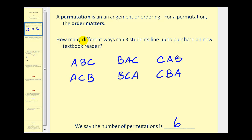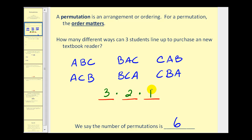Now we can model this situation in another way. You can think of the three positions in line. For the first position there would be three ways it could be filled — with student A, B, or C. Once the first position is filled there would only be two possibilities for the second position. And then once the first two positions are filled there's only one option for the last position. So using the counting principle we multiply three times two times one, which also gives us six possible ways that three students can line up.